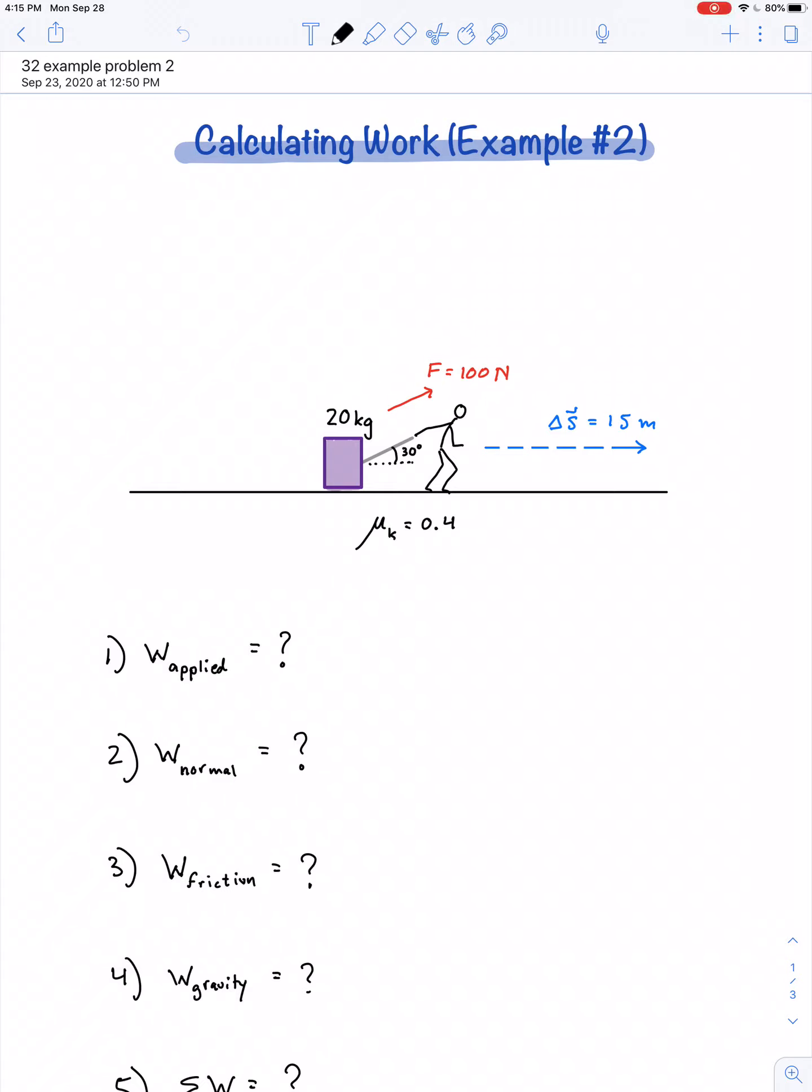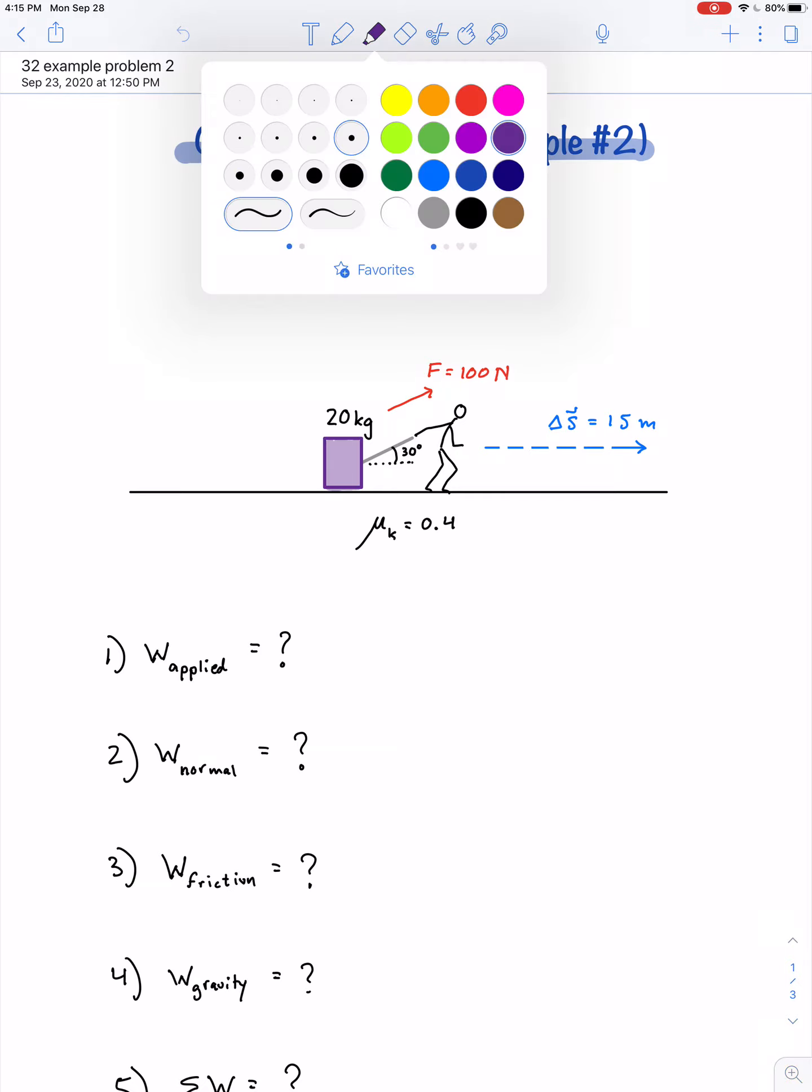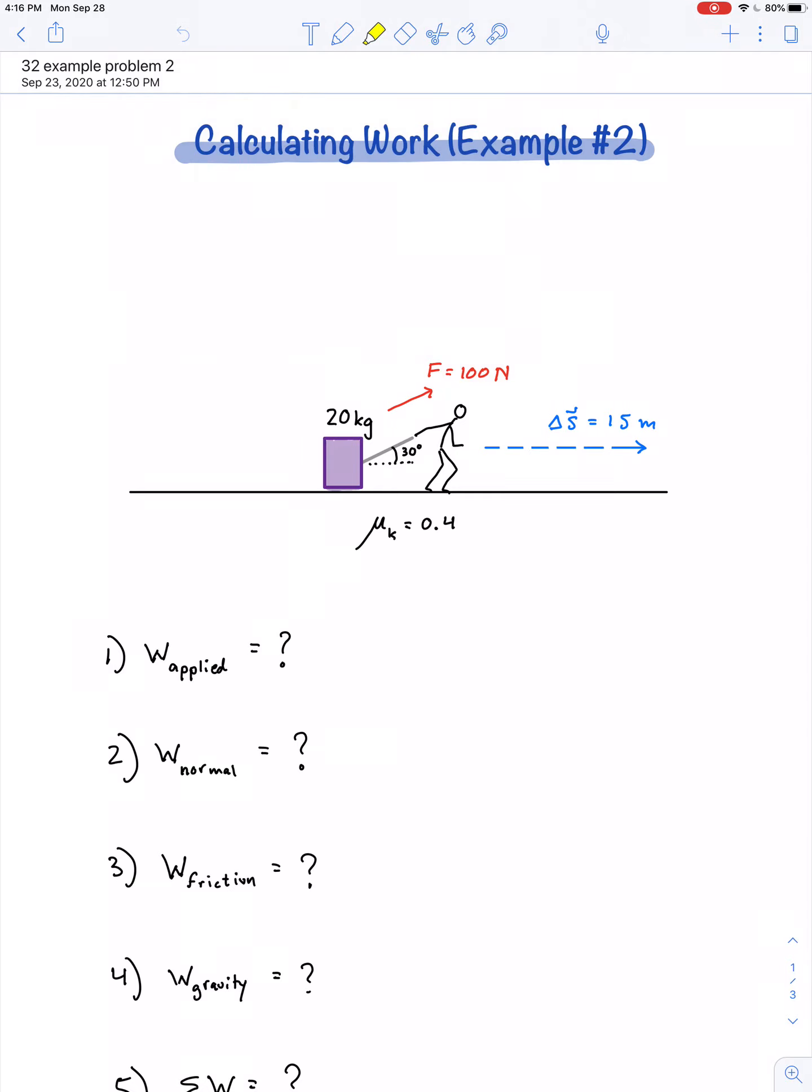Here's somebody dragging a suitcase across level ground, and the ground has a coefficient of friction with the suitcase of 0.4. A force of 100 newtons is applied at an angle of 30 degrees, and that pulls the suitcase a distance of 15 meters.